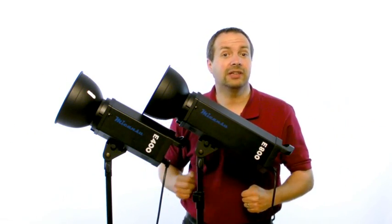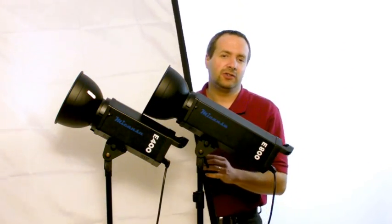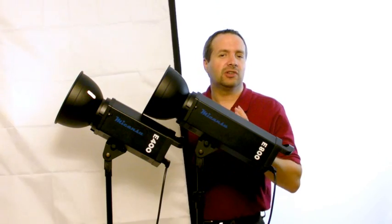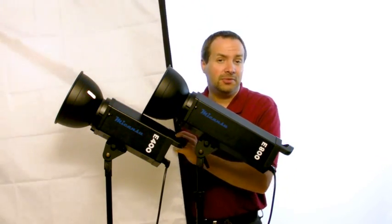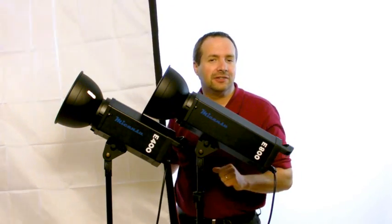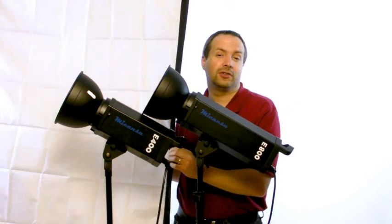Alternatively you might be using one of these, which is a very large soft box. We looked at the octagonal soft box in a previous video. And if you're using one of these it helps to have a more powerful light. So using the E800 would be a good choice with a large soft box.